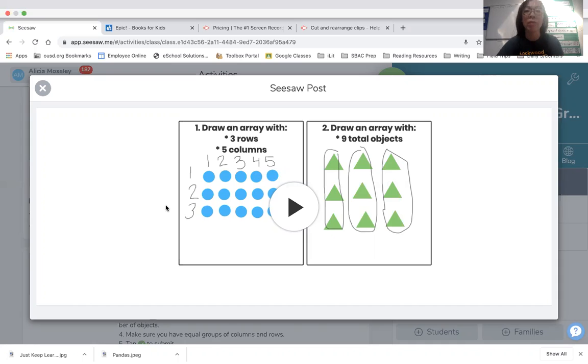You also might have to draw an array with a total number of items. So in number two, it says you're going to draw an array with nine total items. Please watch this example because there's different tricks we can use to help us figure out how many we can make in an array. Remember, with an array, you have to have the exact same amount in every row. So look at this. Three in the first row, three in the second row, three in the third row.